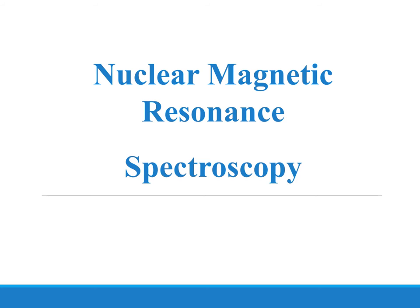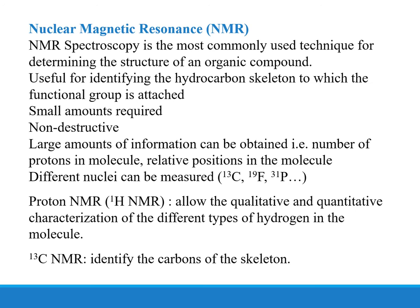Today we're going to be looking at nuclear magnetic resonance spectroscopy. NMR spectroscopy is the most commonly used technique for determining the structure of an organic compound, and it is useful for identifying the hydrocarbon skeleton to which the functional group is attached.